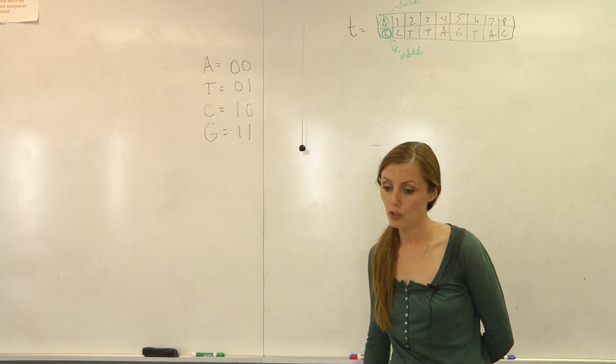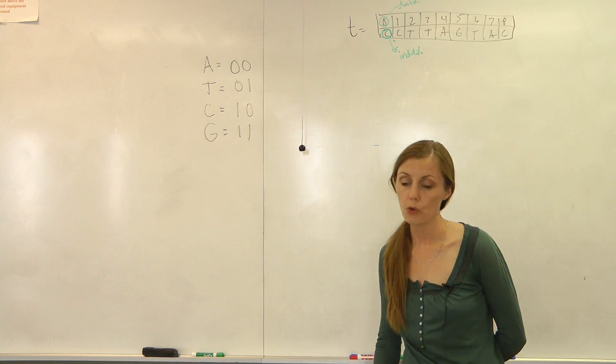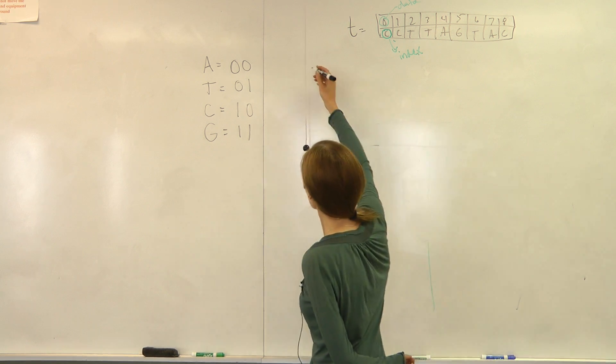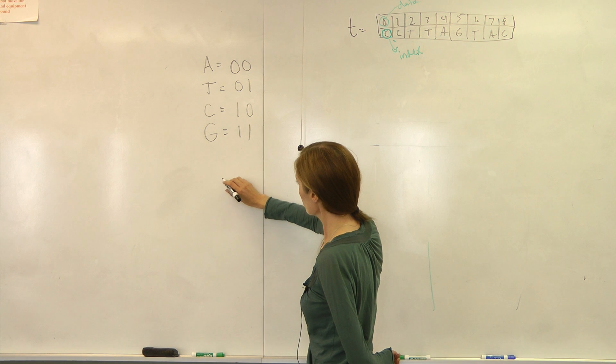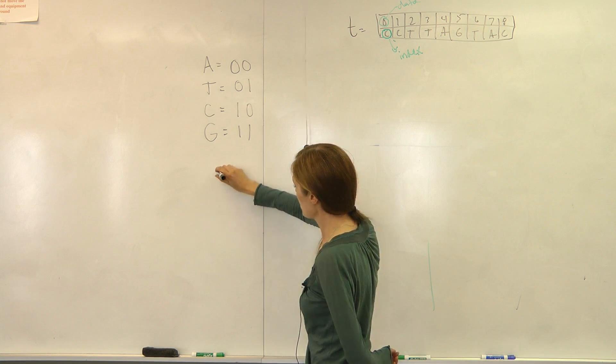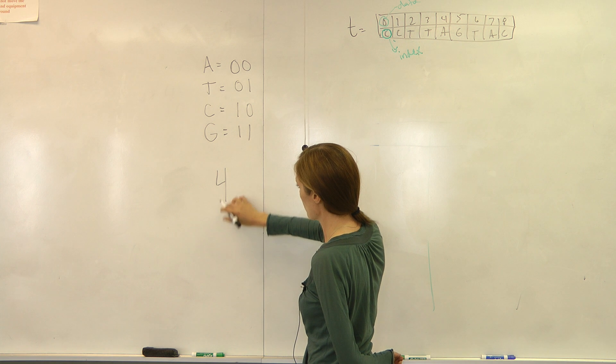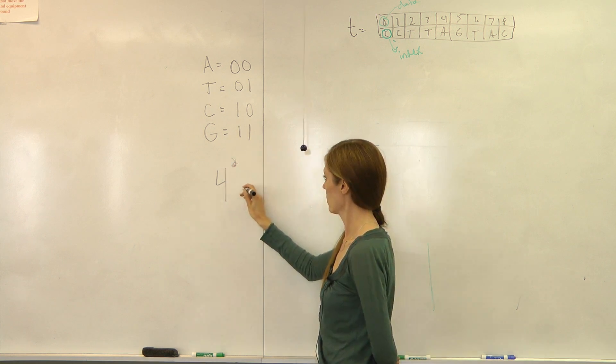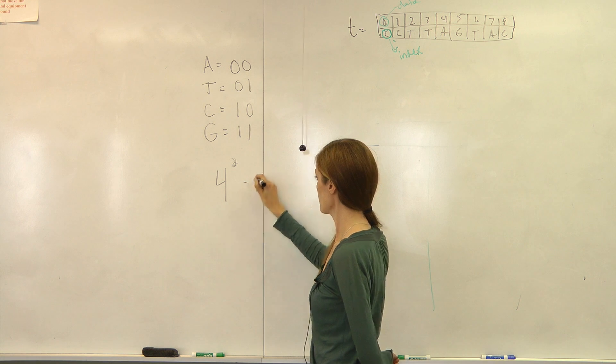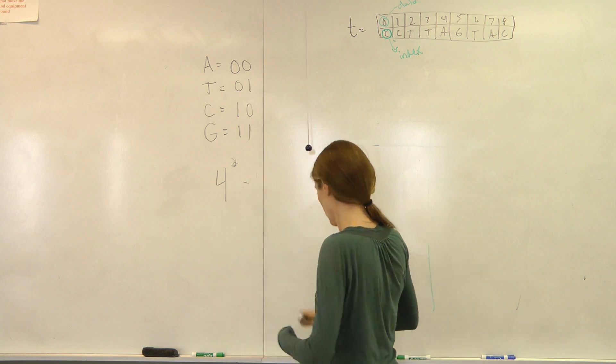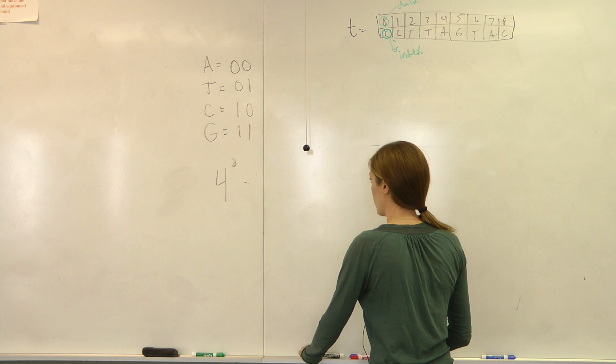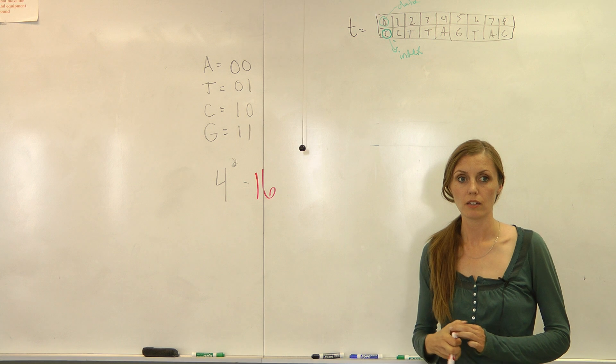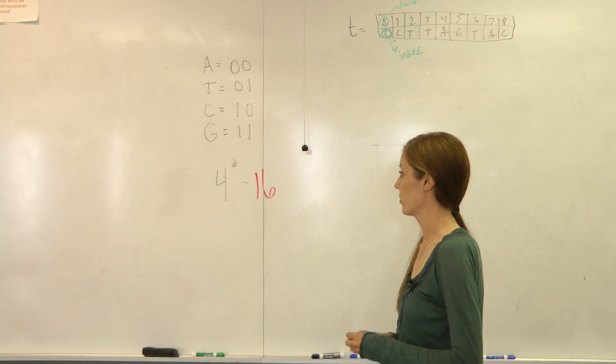I asked for you to represent two-mer patterns. So if we have a choice of four nucleotides in the pattern with a length of 2, then we have 16 possible two-mer patterns.